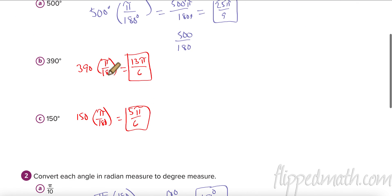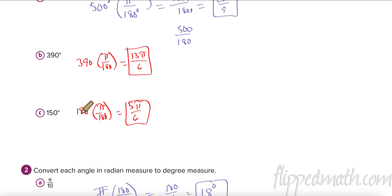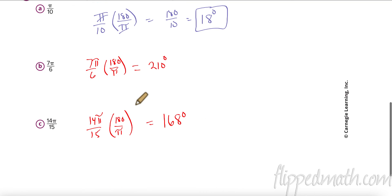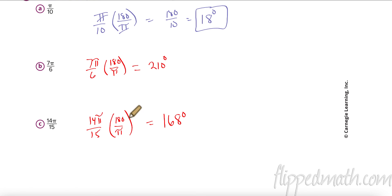For the practice problems: 390 degrees × π/180 — in the calculator, 390 ÷ 180, Math Frac, then add π — gives 13π over 6. For 150 degrees: 150 × π/180 = 5π over 6. Converting 7π/6 to degrees: 7/6 × 180 = 210 degrees. Converting 14π/15 to degrees: 14/15 × 180 = 168 degrees.